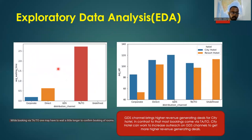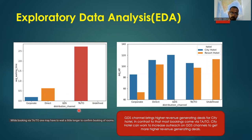From the distribution channel and average waiting time graph, TA and TO have the maximum average waiting time, while undefined and GDS have the lowest average waiting time.